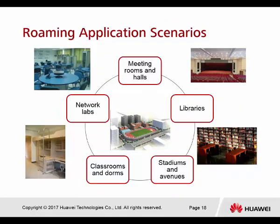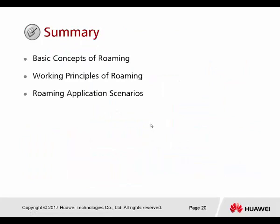Roaming application scenarios include network labs, meeting rooms, and halls — where the wide open space may require many APs due to coverage and concurrent user requirements — as well as libraries, stadiums, avenues, classrooms, and regular rooms. Summary: we covered the basic concept of Roaming, the working principle of Roaming, how Roaming is performed in different scenarios including layer two and layer three networks with different forwarding modes, and the Roaming application scenarios.